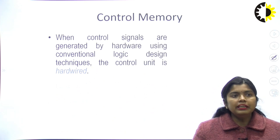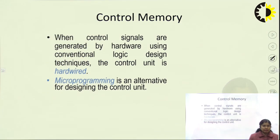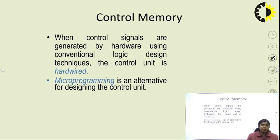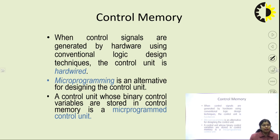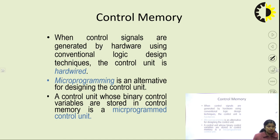Control memory can be designed by two ways: hard-wired control and micro-programmed control. These are the two methods of designing the control memory. The hard-wired control unit is made using hardware components like decoders, encoders, multiplexers, and sequential and combinational circuits.